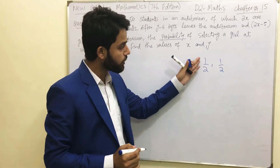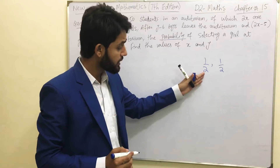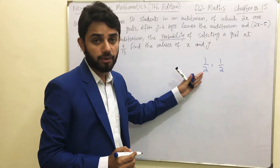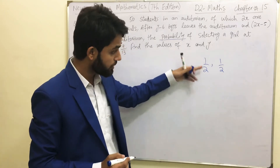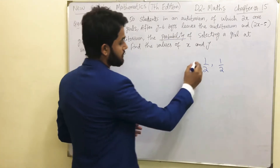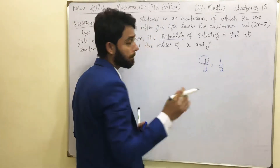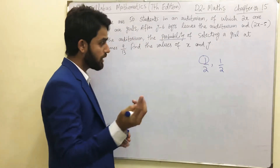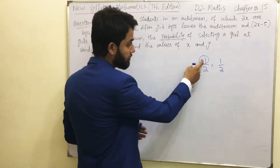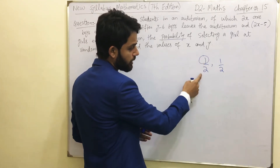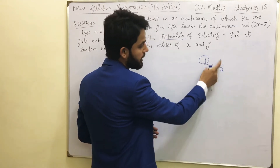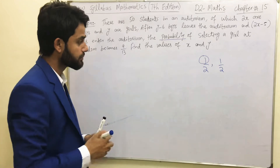What does the two in the denominator represent? It represents the total number of possible outcomes — you have two outcomes: head and tail. The one in the numerator represents the number of favorable outcomes for that specific event. In the case of head, the favorable outcome is one, so it's 1/2. Similarly for tail, the favorable outcome is also one, so it's also 1/2.